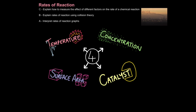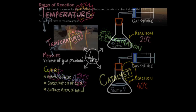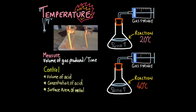The most basic thing you should know is there are four things that affect a rate of reaction: temperature, concentration of the reactants, surface area, and the use of a catalyst. You need to know how to experimentally test all four of these.